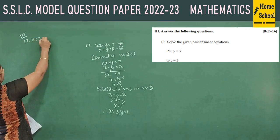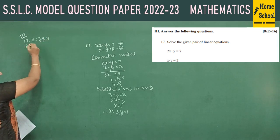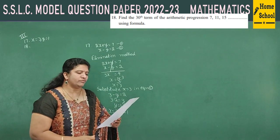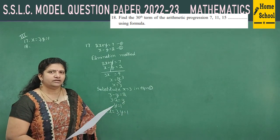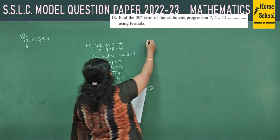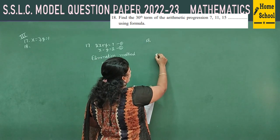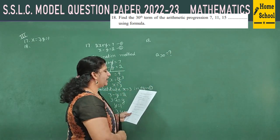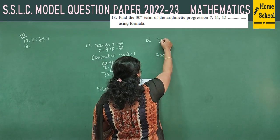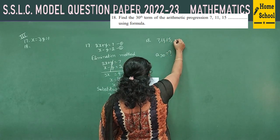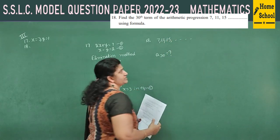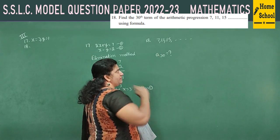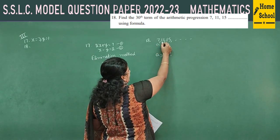Question 18: find the 30th term of the arithmetic progression 7, 11, 15, ... Using the formula, we need to calculate a₃₀. First identify the values from this AP.